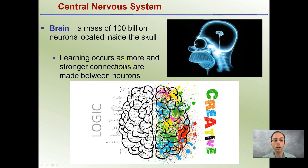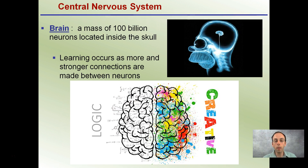You may have heard of left brain and right brain people — left brain typically referring to those good with logic and math, right brain referring to those that are creative and associated with the arts. Now this may have some truth behind it, but there are a lot of interconnections that occur between both your left and right brain.